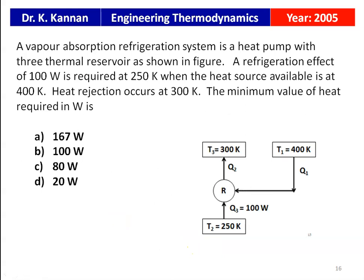From the 2005 question paper: a vapor absorption refrigeration system (heat pump) has three thermal reservoirs. A refrigeration effect of 100 W is required at 250 K; the heat source is at 400 K; heat rejection occurs at 300 K. The minimum heat required is: option A 167 W, option B 100 W, option C 80 W, option D 20 W. The answer is 80 watts.